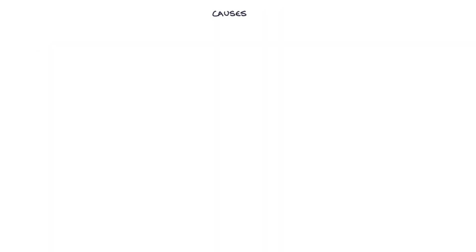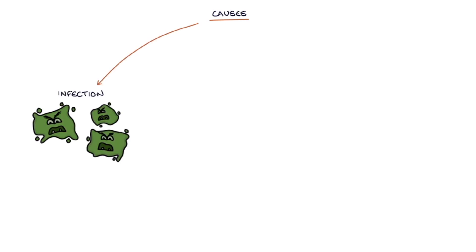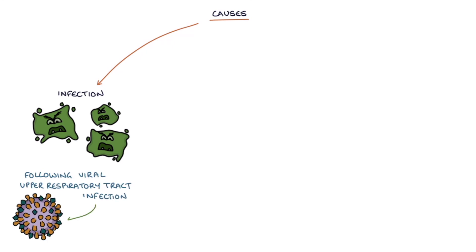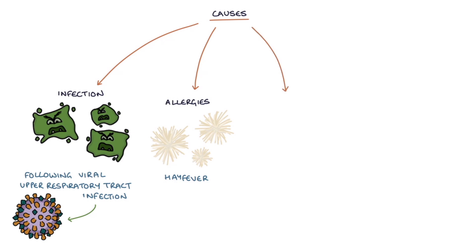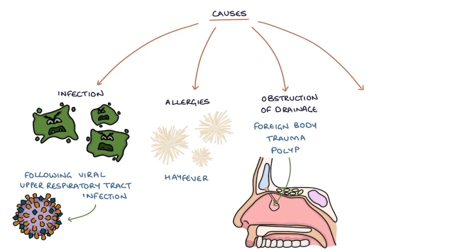Let's talk about the causes. Inflammation of the sinuses can be caused by infection, particularly following viral upper respiratory tract infections. Allergies, for example hay fever, where the patient is likely to have allergic rhinitis. Obstruction of drainage of the sinus, for example due to a foreign body, trauma, or polyps inside the nose. Or smoking. Patients with asthma are also more likely to suffer with sinusitis.